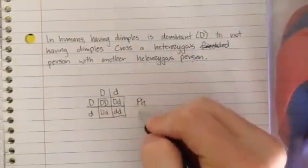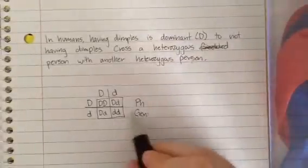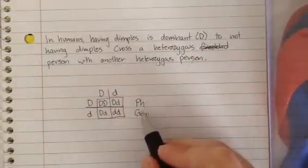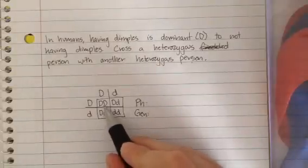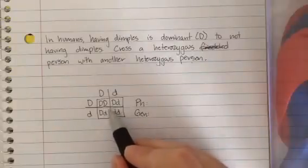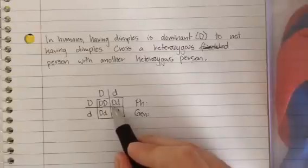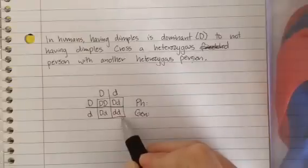Again, if we ask for the phenotypic and genotypic ratio of these crosses, phenotype, physically, what do they look like? We look at this one. Has two big Ds, so it has dimples. These children have at least one big D, which means that they would be dimpled. This individual does not have one, so it would be non-freckled.